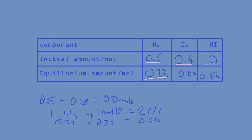And because the size of the reaction vessel was one decimetre cubed, these values are also concentrations of I2, HI, and H2.